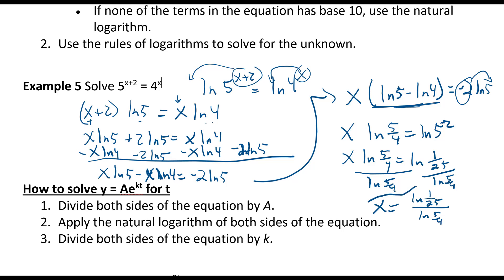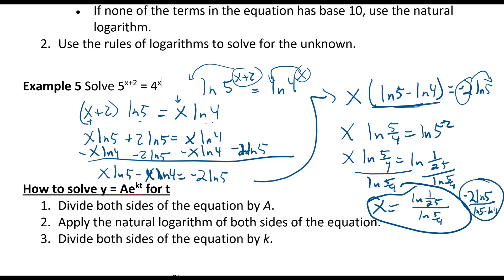That's the exact value. An equivalent form is negative 2·ln5 over (ln5 minus ln4). Both are acceptable answers.